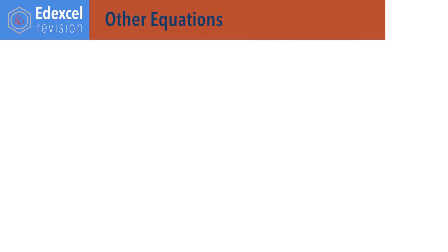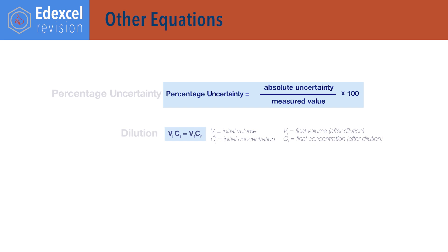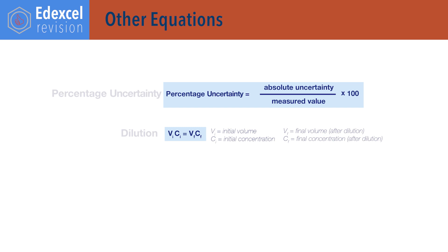Other equations. Percentage uncertainty equals absolute uncertainty divided by the measured value, times 100. Initial volume times initial concentration equals final volume times final concentration — this can be useful for calculating volumes needed for dilutions.